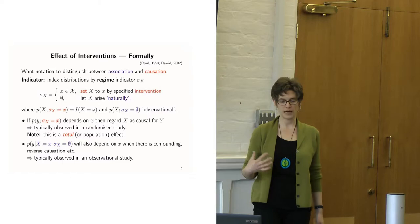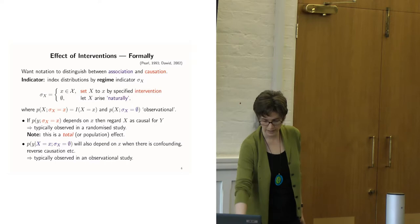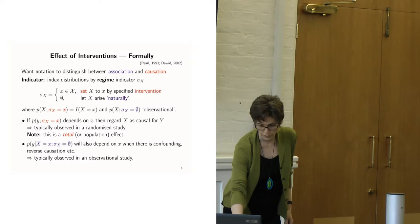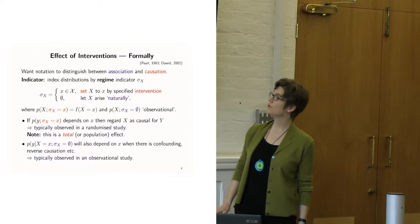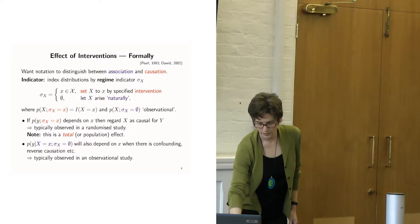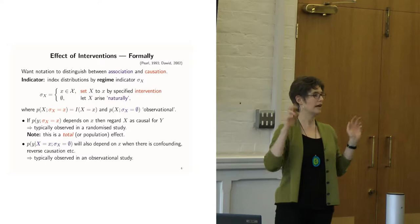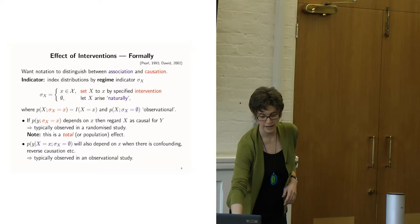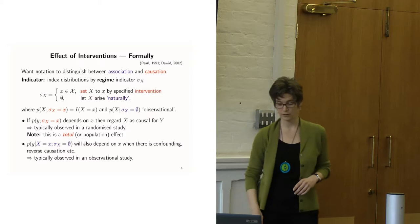If we look at the distribution of the outcome under an intervention, that's like what we would observe in a randomized trial — it is the total effect of exposure on the response, regardless of whether it works through direct or indirect pathways. The usual conditional distribution means we observe Y given that we have observed X, whatever way X came about. This distinction is basically what we mean when we say association is not causation. The blue thing describes association, and the red thing describes causation. If Y depends on the value of X under intervention, we have causation; if Y depends on X under observation, we have association.